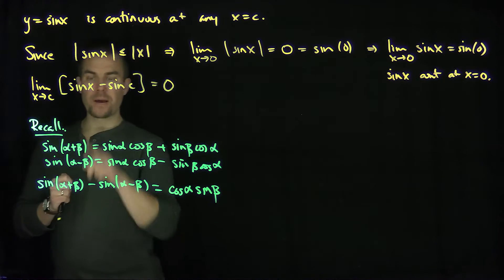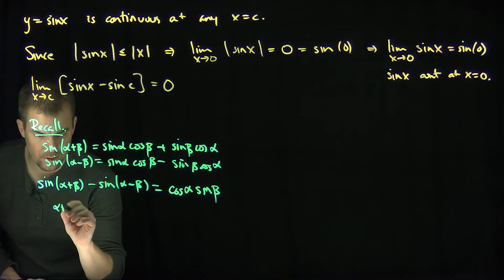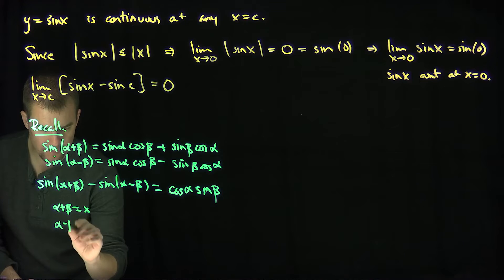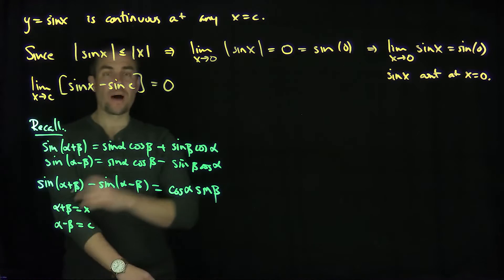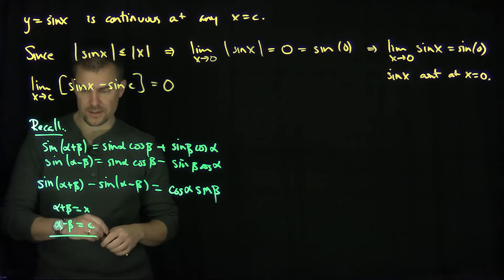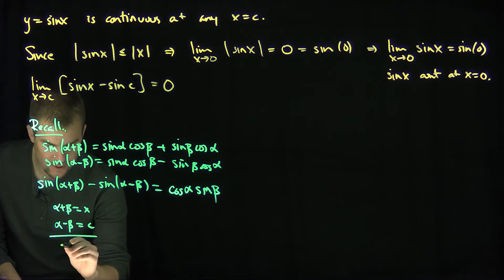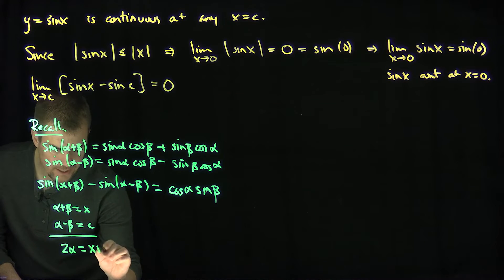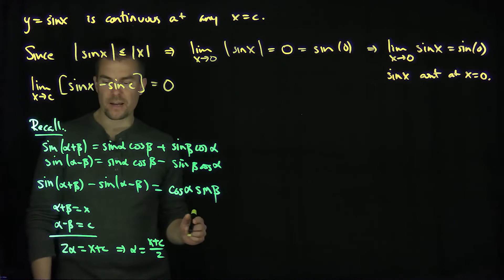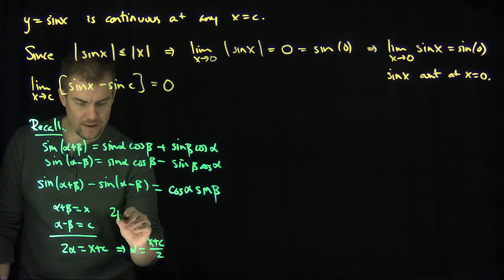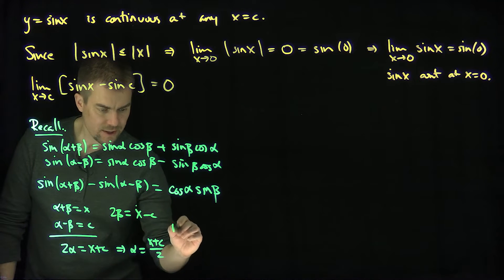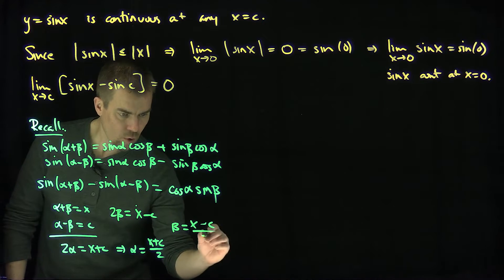Now I want alpha plus beta to equal x, and alpha minus beta to equal c. If I add these two equations, I get 2 alpha equals x plus c, so alpha equals x plus c over 2. If I subtract them, I get 2 beta equals x minus c, so beta equals x minus c over 2.